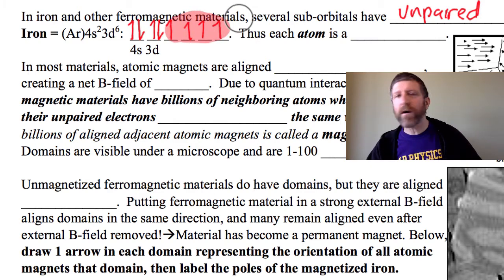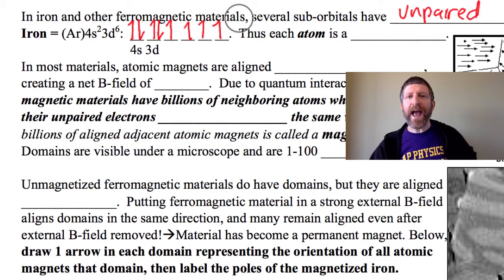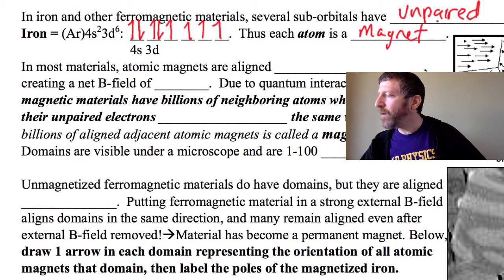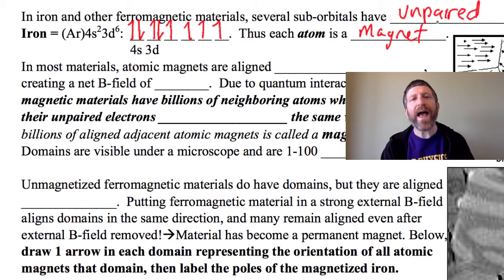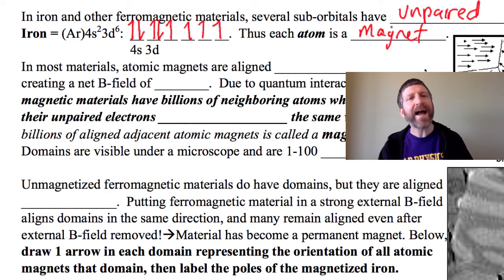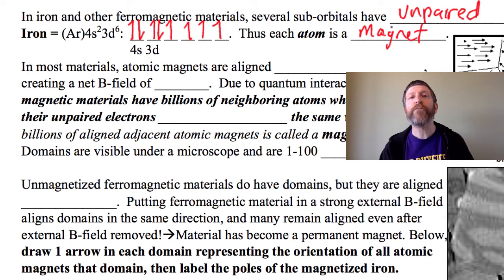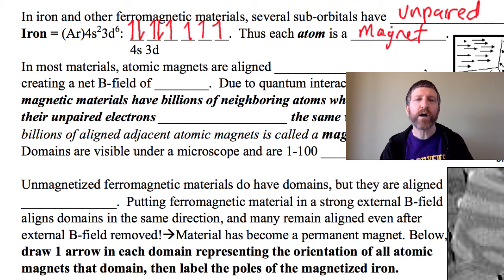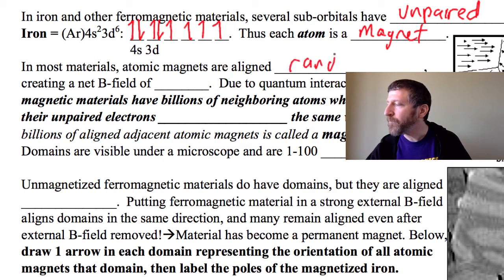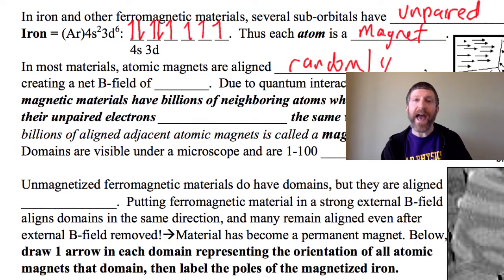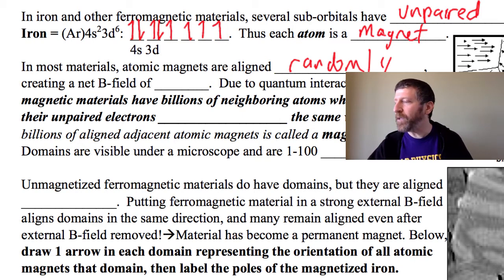You'll notice that several of these electrons are unpaired — they have no pair — so every atom of iron is a magnet. Any material with unpaired electrons exhibits paramagnetism, which is a weak magnetic effect. In paramagnetism, every atom is a magnet but the atomic magnets tend to align randomly, creating a net B field of zero.